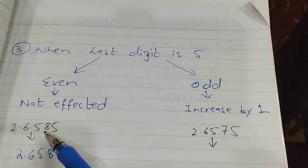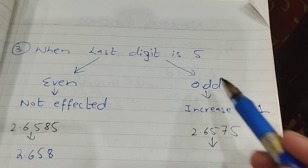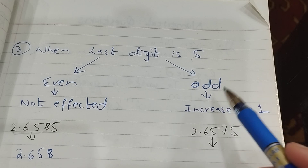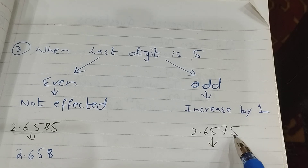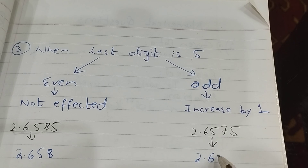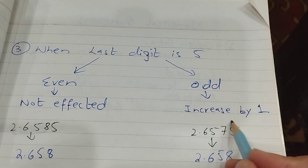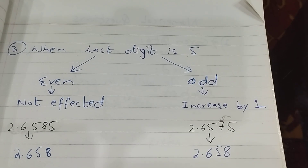यह effect नहीं हुआ क्योंकि last digit five है लेकिन साथ वाला even है — not affected। अब अगर last digit five है और उसके साथ वाला number odd है, तो increase by one। जैसे last digit five हो और साथ वाला odd हो, तो वह number one के साथ increase हो जाएगा — odd होने की वजह से increase हो गया। So these are your three rules for how to round off any number.